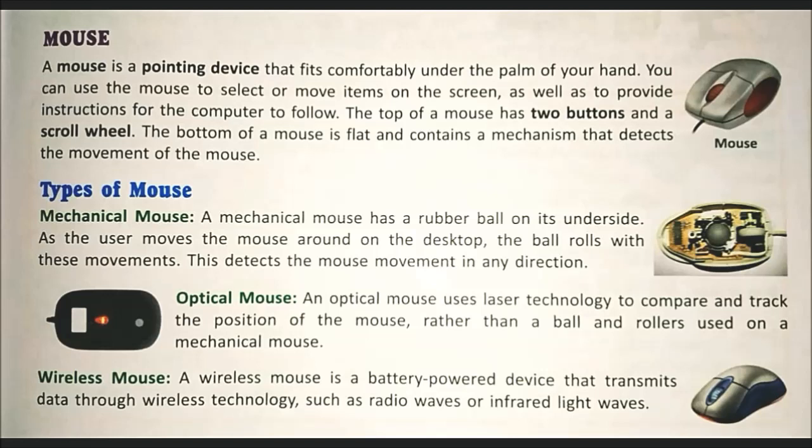Mouse ek pointing device hai jisko ki hum apne hand mein hold kar sakte hain. Ye screen ke upar, with the help of an arrow, move karta hai. Iske upar two buttons hote hain — left and right — aur ek scroll wheel hoti hai jis se hum screen ko scroll karte hain. Niche se ye flat hota hai aur iske andar jo machine hoti hai wo detect karti hai jo surface ko, jiski sensor se ye work karta hai aur screen ke upar move hota hai.